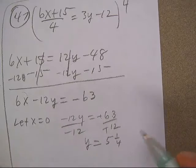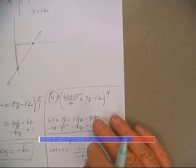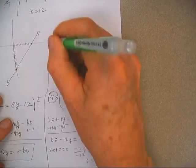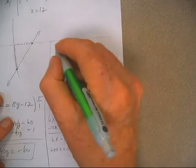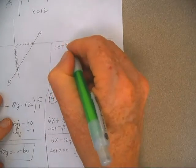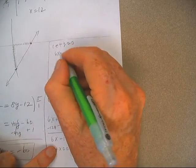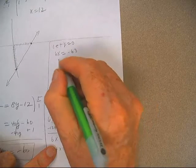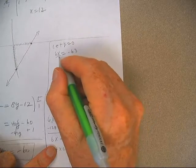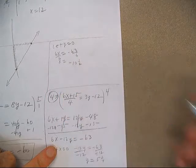And then I ran out of room right there. Trying to squeeze this one in. So let's just continue up here. Then on this one, we'll let y equals 0. And so I've got 6x equals negative 63. Divide by 6. That's going to be negative 10 and a half.